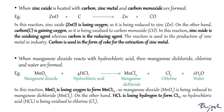Next example: when zinc oxide is heated with carbon, zinc metal and carbon monoxide are formed. In this reaction, zinc oxide is losing oxygen, so it is being reduced to zinc, while carbon is gaining oxygen and being oxidized to carbon monoxide. Here zinc oxide is the oxidizing agent, whereas carbon is the reducing agent. This reaction is used in industry for the production of zinc metal, where carbon is used in the form of coke — fine carbon particles like graphite.